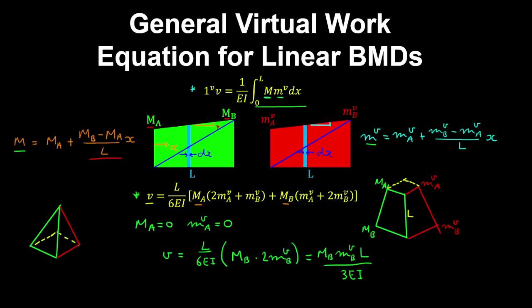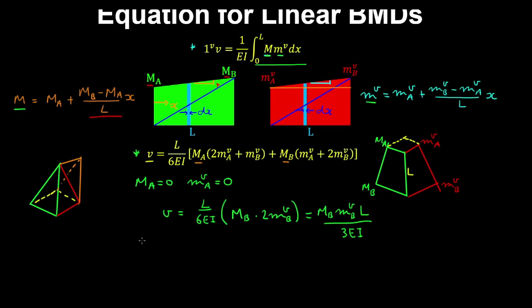And you can obtain similar cases. So for example, if the virtual bending moment diagram is rectangular, then this becomes a rectangle, and then you're effectively obtaining the volume of a wedge. So in that case, you still have ma is 0, but mav is equal to mbv.